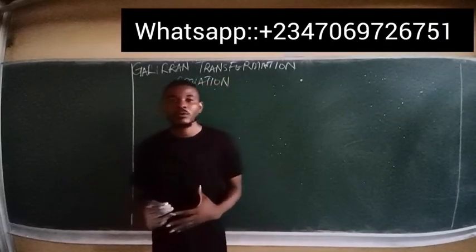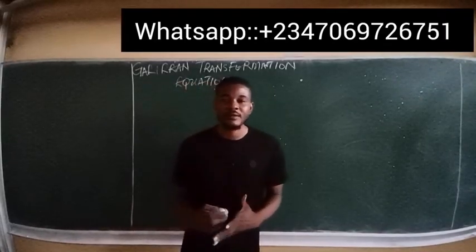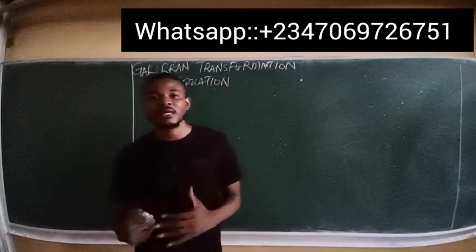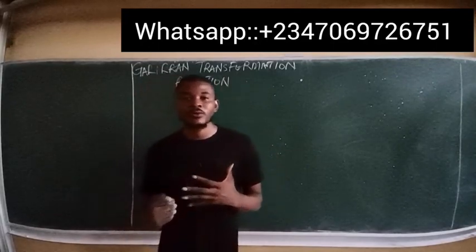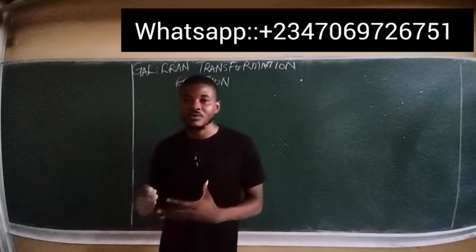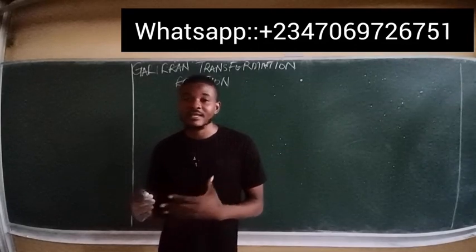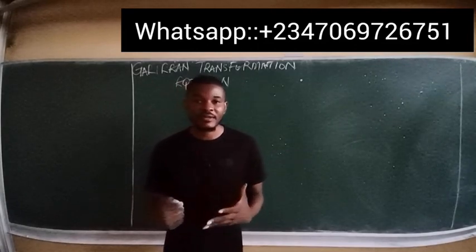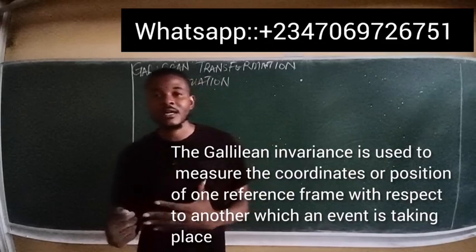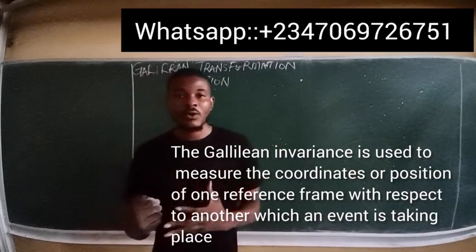Hello, welcome to Engineer's Mindset. In today's class we are going to be talking about the Galilean transformation equation, also known as Galilean invariance. The Galilean invariance is used to measure the coordinates of position of one reference frame with respect to another reference frame in which an event is taking place.